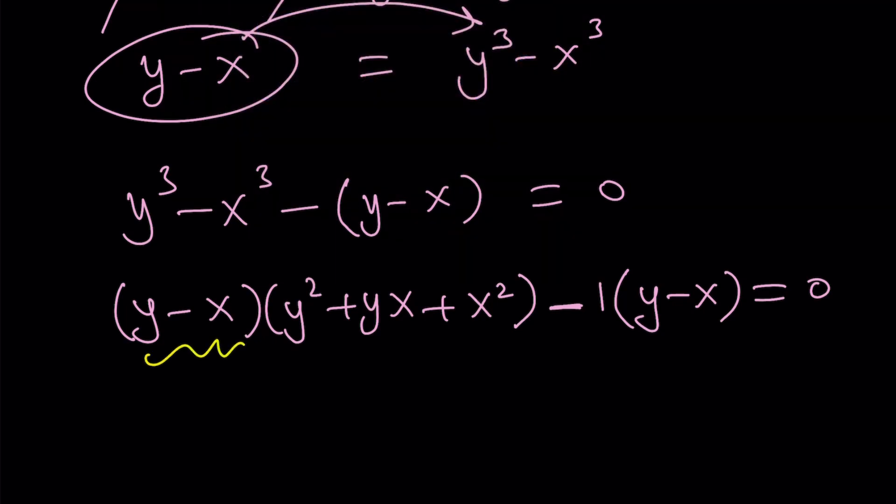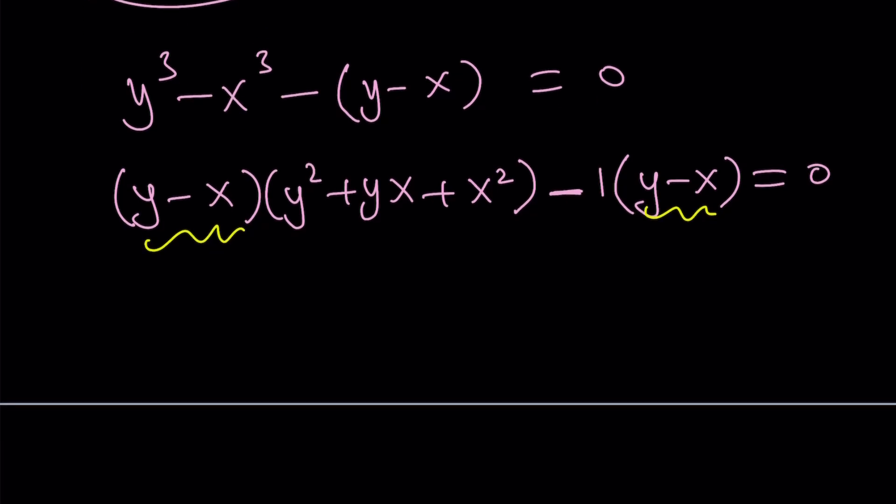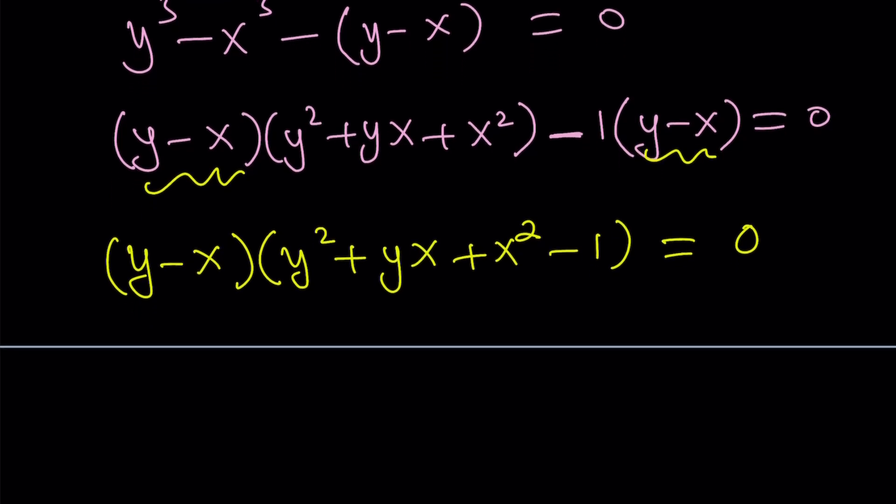Notice that we have y minus x as a common factor. So I can take it out. If I take out y minus x, then I get the following. y squared plus yx plus x squared minus 1 equals 0. Now, what am I getting from here? So I'm getting two factors, and their product is 0. So each factor can be set equal to 0. Remember, y is something we invented. So we can always back substitute.